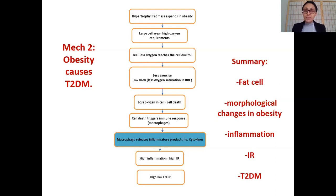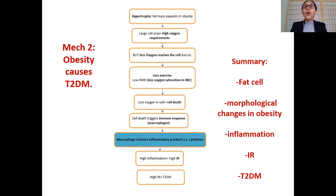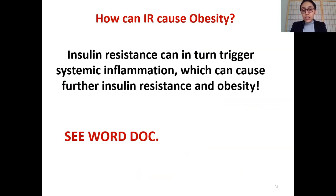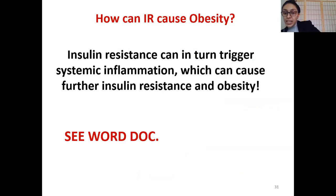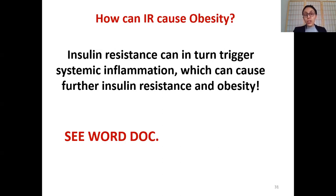These are the two most commonly researched mechanisms in the literature. There are many more, but these are the main ones. This is how obesity results in type 2 diabetes — which is why excess weight is a risk factor for type 2 diabetes. Now the question changes: how can insulin resistance cause obesity? When a diabetic individual has high insulin resistance, this can trigger inflammation, which can further result in obesity.